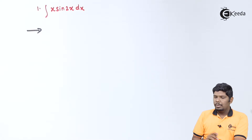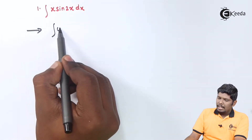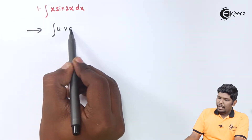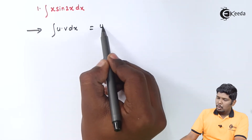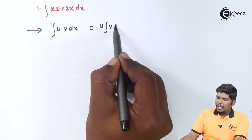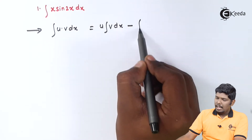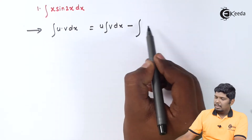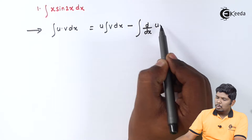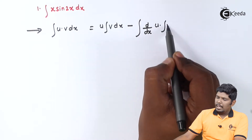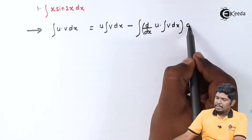Now what is the integral uv rule? It is given as: integral uv dx equals u into integral v dx, minus integral of d by dx of u, into integral of v dx, the whole dx.